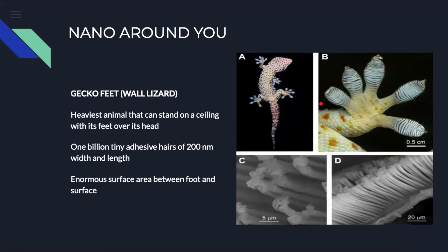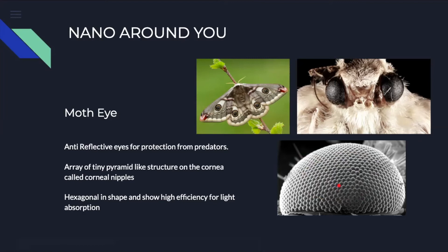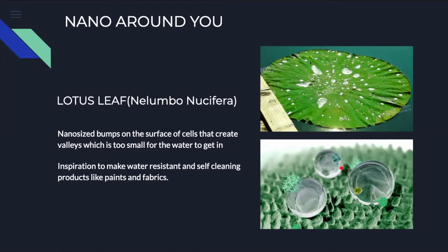To appreciate the operation of nano around us, let's take a few examples. Gecko feet, which are known for their adhesion to walls because of their tiny nano-sized hairs. Moth eye nanostructures are well-known examples of biological anti-reflective surfaces, which help protect them from predators. Lotus leaves, owing to nano-sized bumps on their surface, are an inspiration to make water-resistant and self-cleaning panes and fabrics.